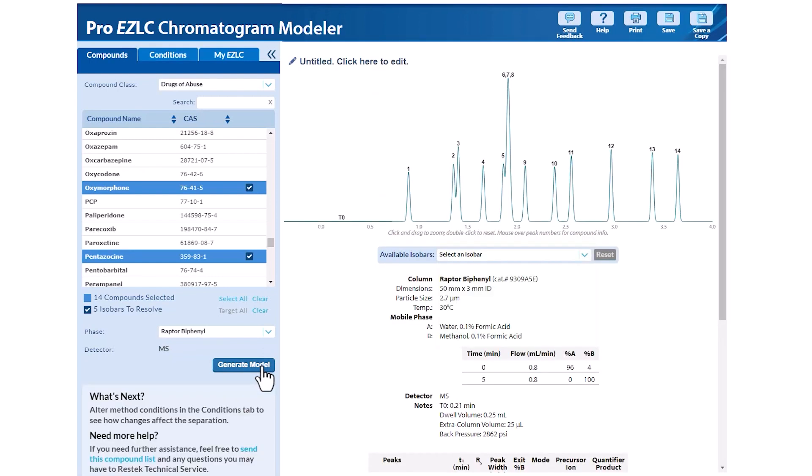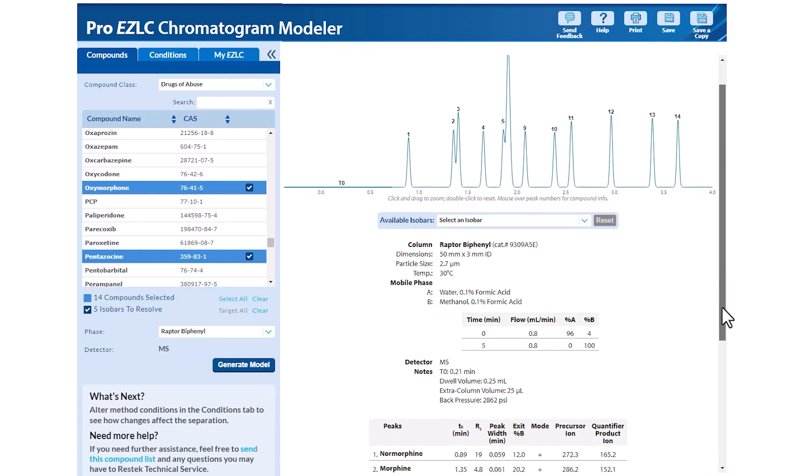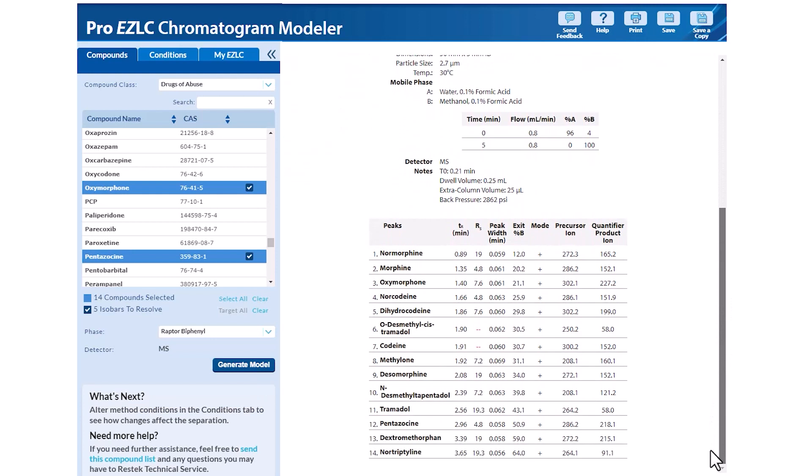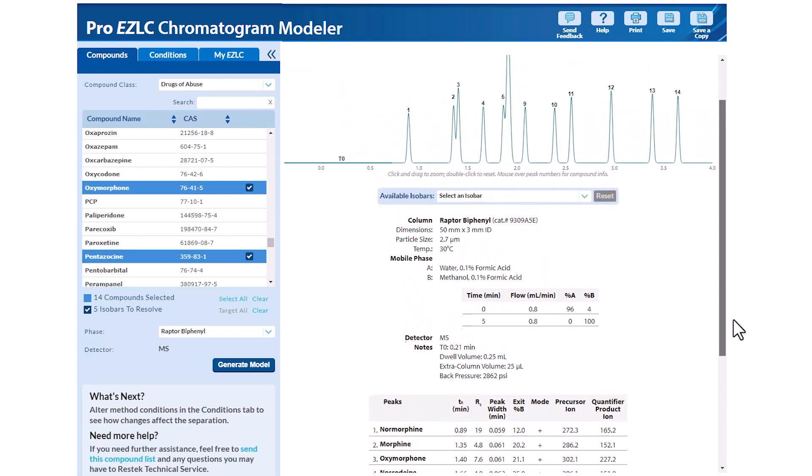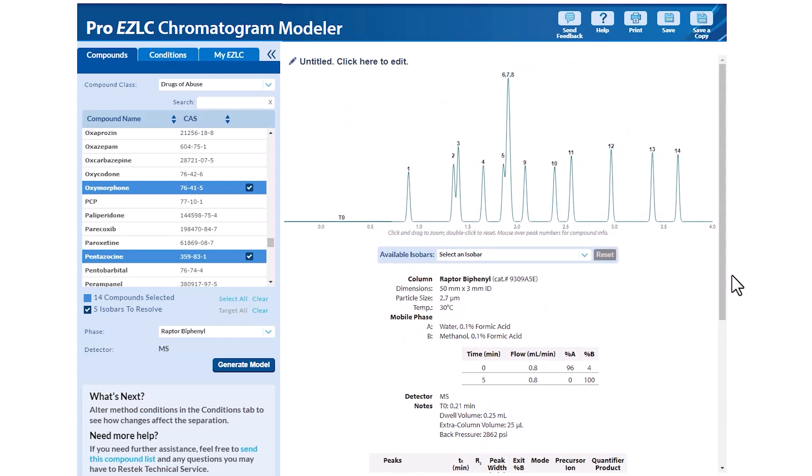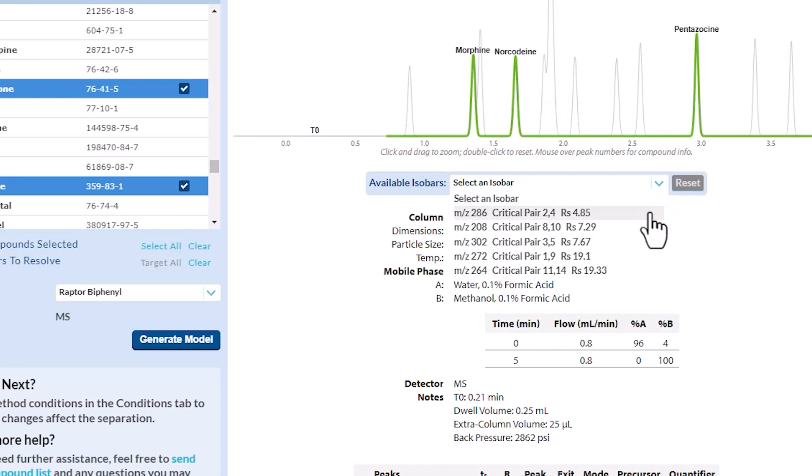An interactive, modeled chromatogram will appear on the right-hand side of the interface. Below the chromatogram are the run conditions and a table of your selected analytes. Our compound list includes five isobars which we can view in the available isobars drop-down list below the modeled chromatogram.